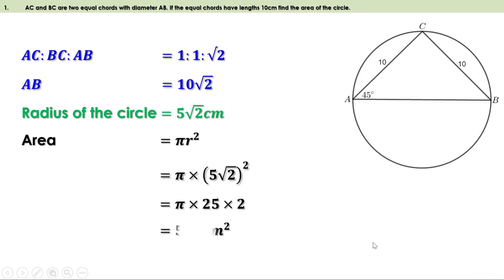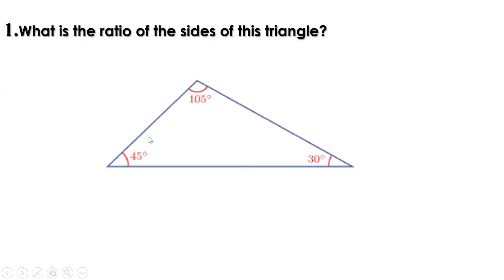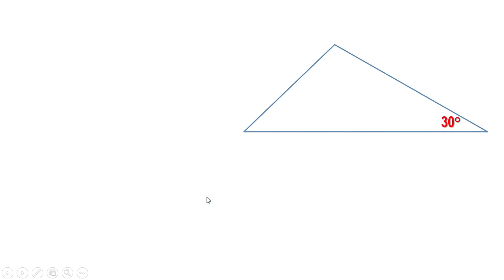Now let us do some more problems using what we have learned. What is the ratio of the sides of a triangle with angles 45°, 30°, and 105°? We have learned only two types of triangles: one with angles 45-45-90 and the other with angles 30-60-90. Here the angles are 30°, 45°, and 105°. Since one angle is 45° and another is 30°, if we draw a perpendicular from the vertex opposite 105° to the opposite side, we get a 90° angle and can split this triangle into two known triangles.